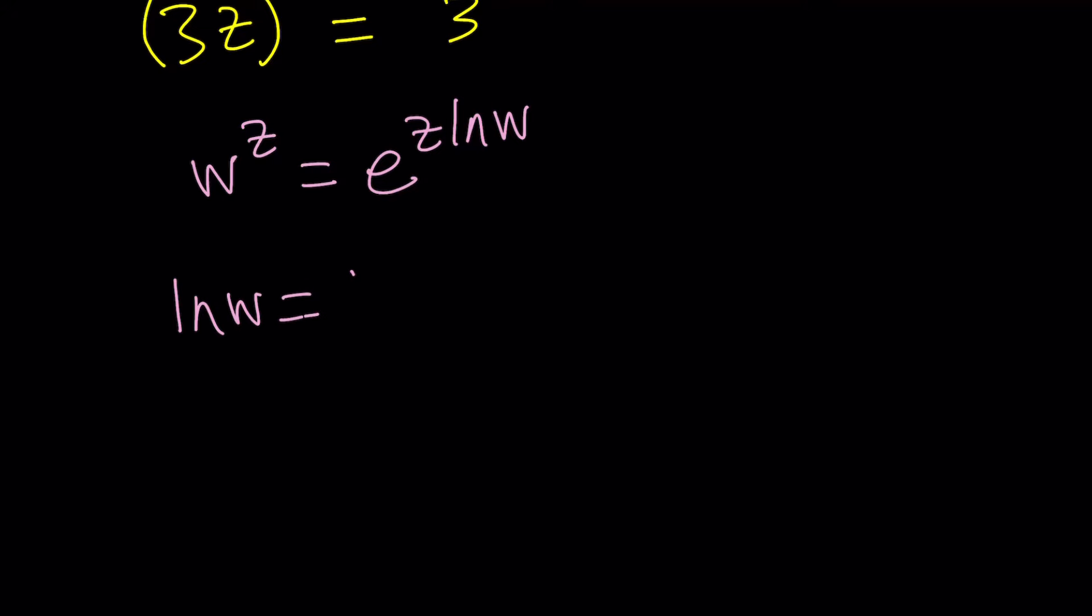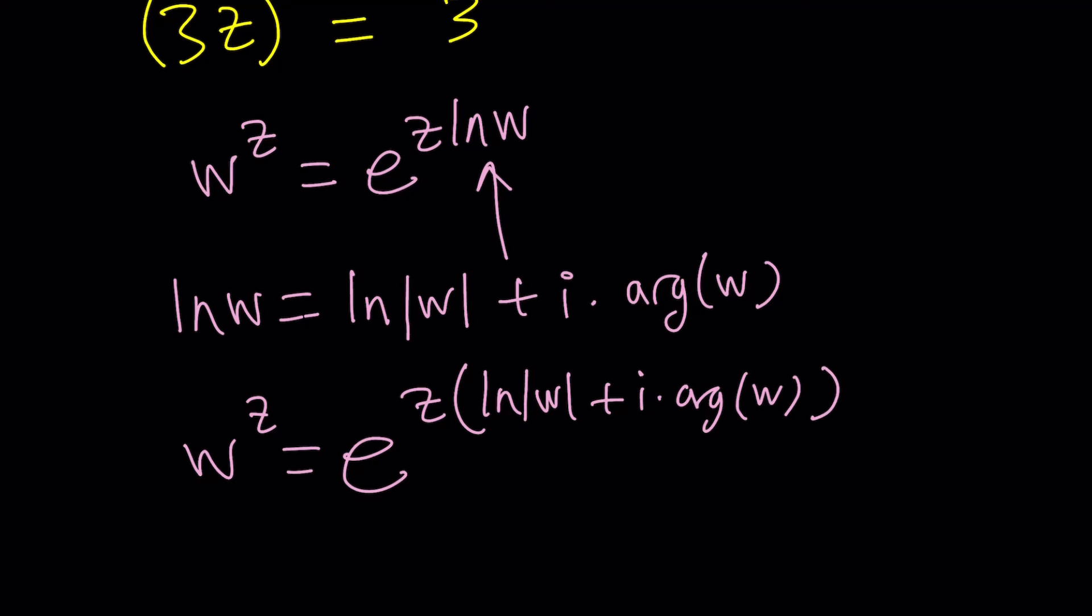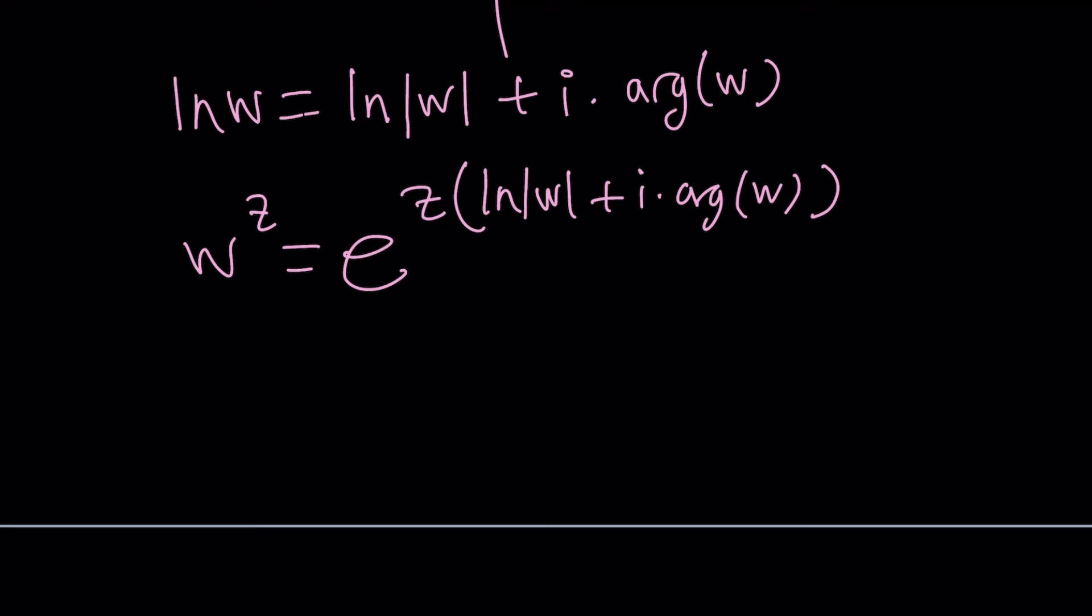ln w, if w is a complex number, is the same thing as ln absolute value of w, which is a real number by the way, plus i times the argument of w, which is kind of like the theta, the angle that it makes. Now, we can go ahead and plug this in if you want and come up with a more general formula like e to the power z times ln absolute value of w plus i times the argument of w. And guess what? This is going to give you a complex number. But we can still work on this and distribute because this is a real value. Absolute value of w is real, and that is non-negative and that shouldn't be zero either. And ln is well-defined in the real world.